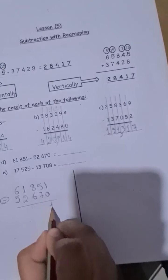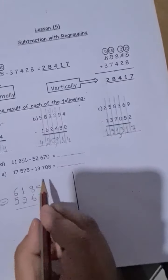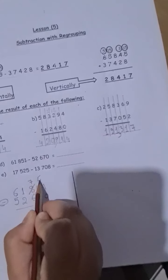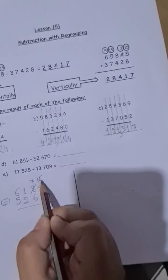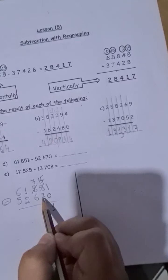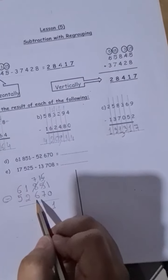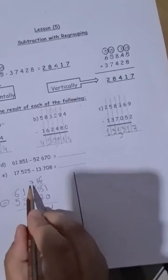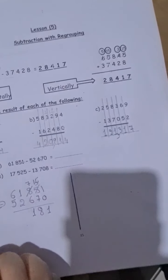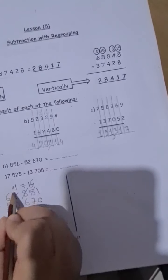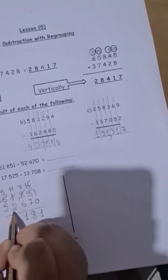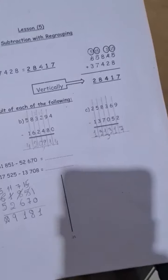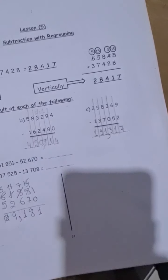Now, 1 minus 0 is 1. 5 minus 7 cannot because it's more on floor. So go next door. The 8 becomes 7 and the 5 becomes 15. Now, after 7, from 15 take 7. Here, after 7, 8, 9, 10, 11, 12, 13, 14, 15. It's here 8. 7 minus 6 is 1. Here, 1 minus 2, we cannot. The 1 becomes 11 and the 6 becomes 5. Now, 11 minus 2 is 9. 5 minus 5 is 0, which has no meaning. Now, my number is 9,181.